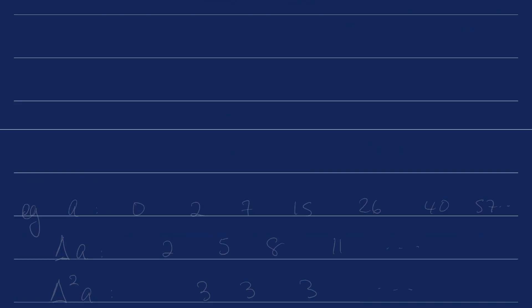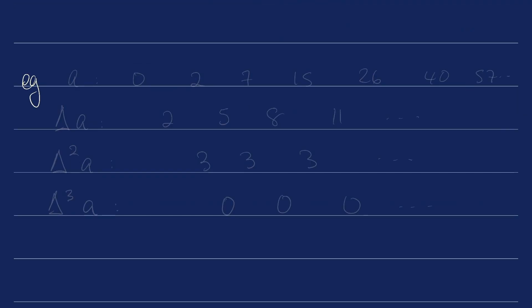Let's do an example. Say we've got a sequence 0, 2, 7, 15, 26, 40, 57, etc. The difference operator applied to a is going to give the sequence 2, 5, 8, 11, etc.